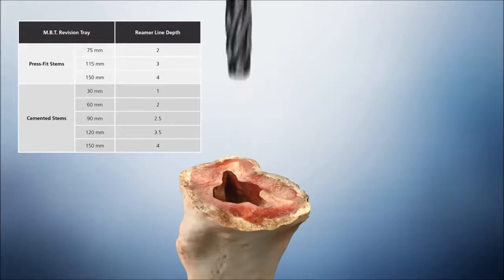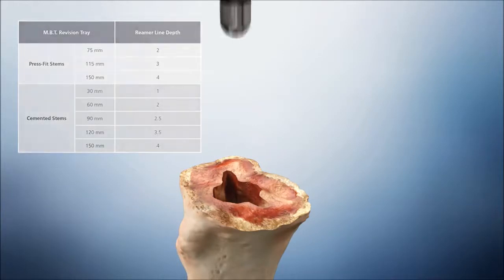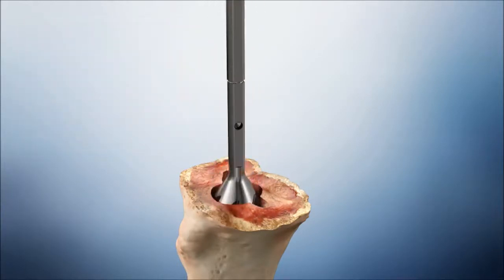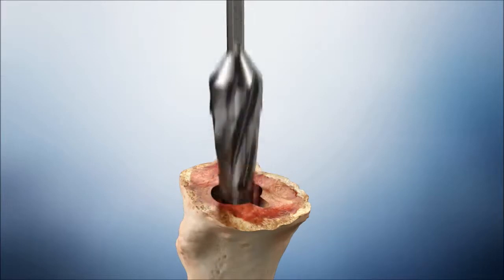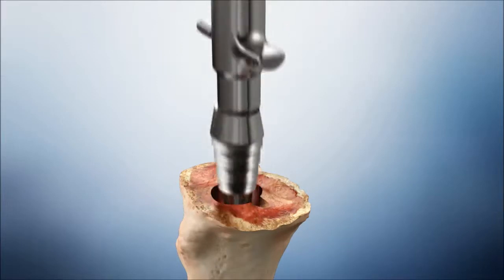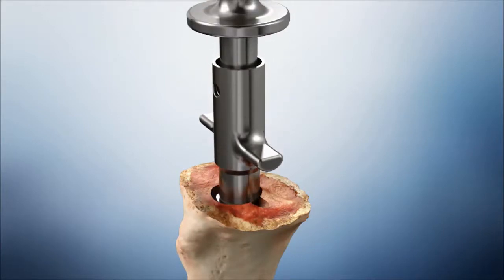With the appropriate size stem trial assembled to the cemented MBT revision tapered reamer, ream to the planned proximal tibial resection level. Assemble the appropriate size stem trial to the smallest tibial broach and impact into the tibia until the top surface is at the desired proximal tibial resection level.